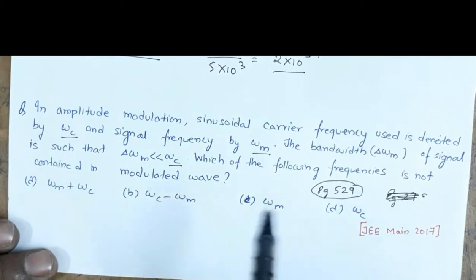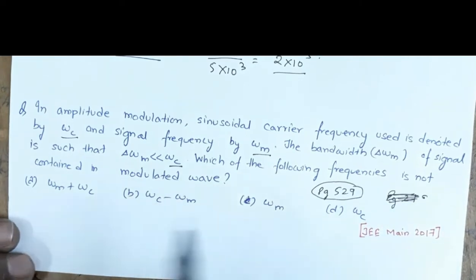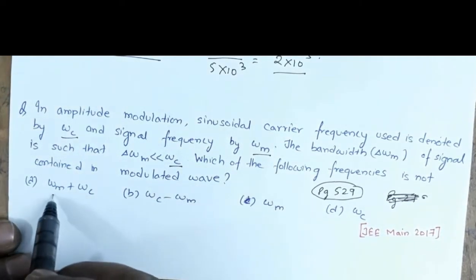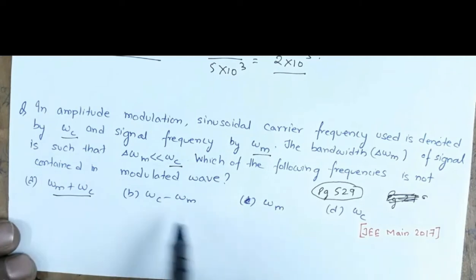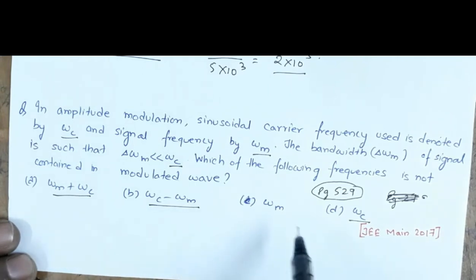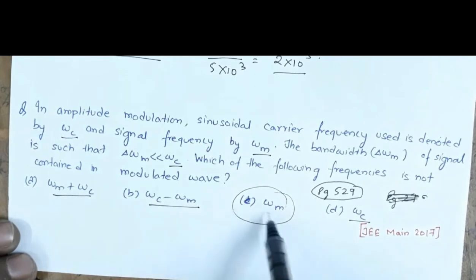For amplitude modulation, the frequencies contained in the modulated wave are ωc + ωm, ωc − ωm, and ωc. The question asks what is NOT contained, so the answer is ωm. Therefore option C is the correct answer.